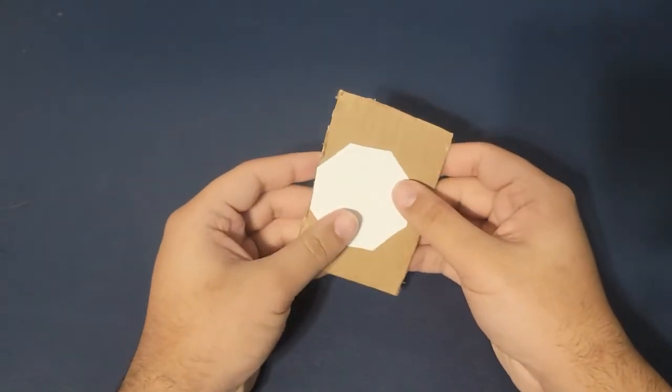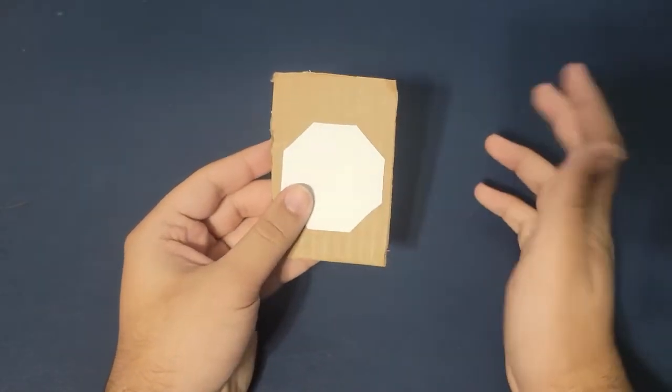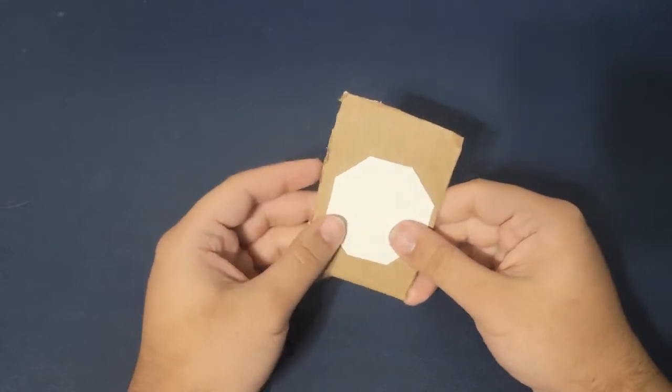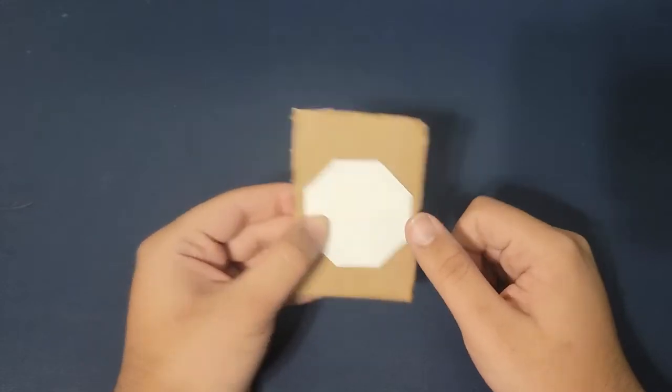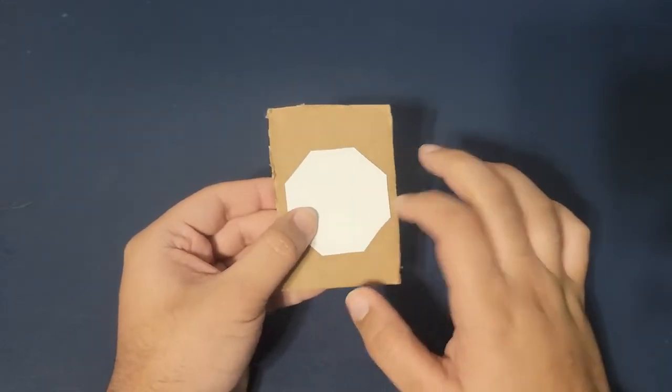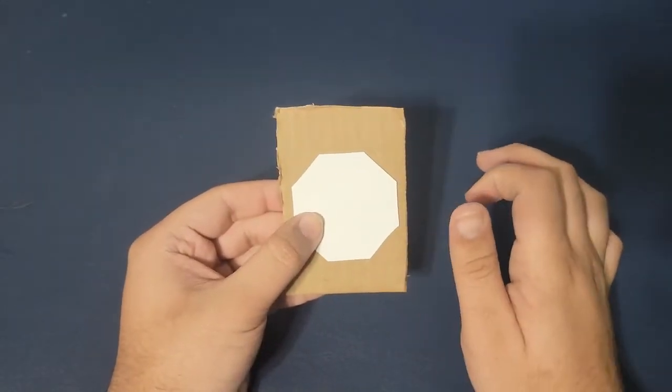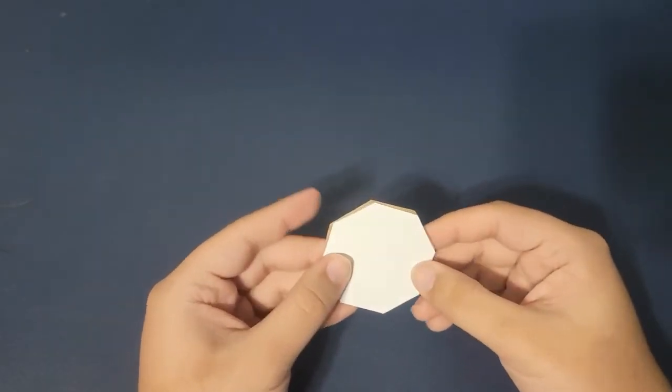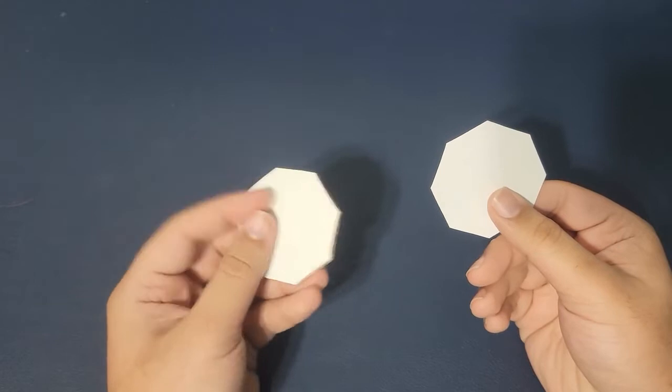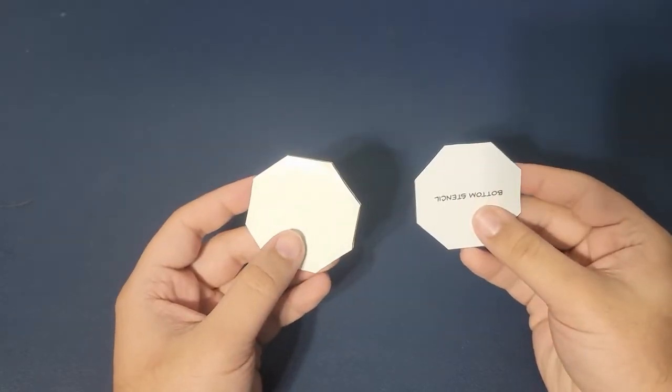For the second piece, you're going to want to take a piece of cardboard, you can cut it off of a box or whatever you have, and trace this octagon out. Then you're going to cut it out so you have an octagon-shaped cardboard. There you go, this is what you want to have - the cardboard exact cut of the stencil.